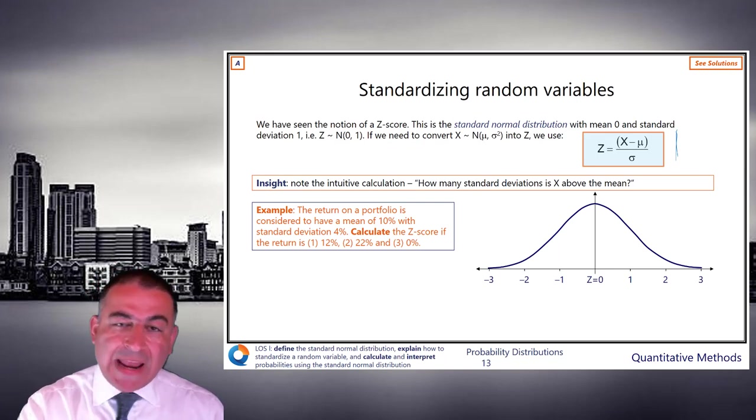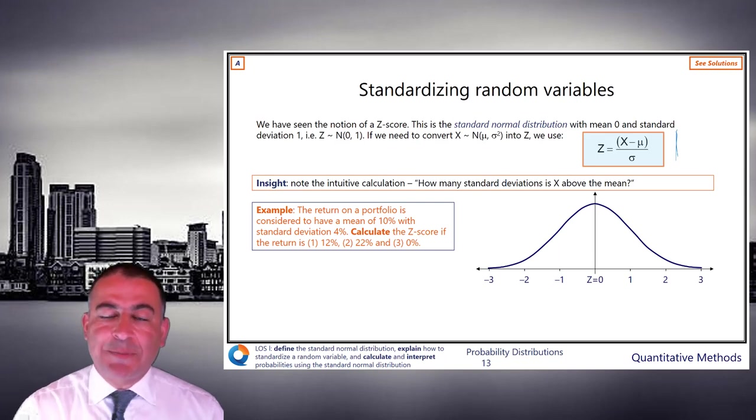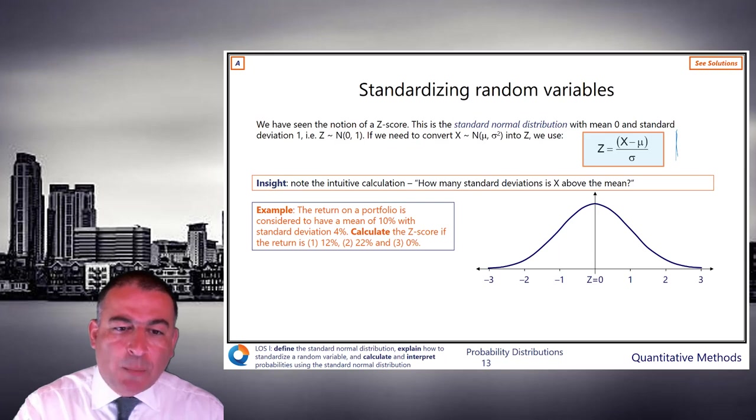So above the mean, x minus mu, how many standard deviations is that? x minus mu divided by sigma. So I really hope this is fairly obvious. So we can use that formula or not, as we may like. So the example.